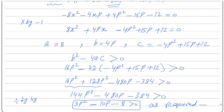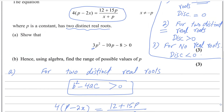The first part of question 6 is done. For the second part: using algebra, find the range of possible values of p. Because the left-hand side is a quadratic inequality greater than 0, and the coefficient of p squared is positive, the graph of this quadratic will be u-shaped. If the coefficient is negative, it would be m-shaped. We need to find the critical values to determine the range.